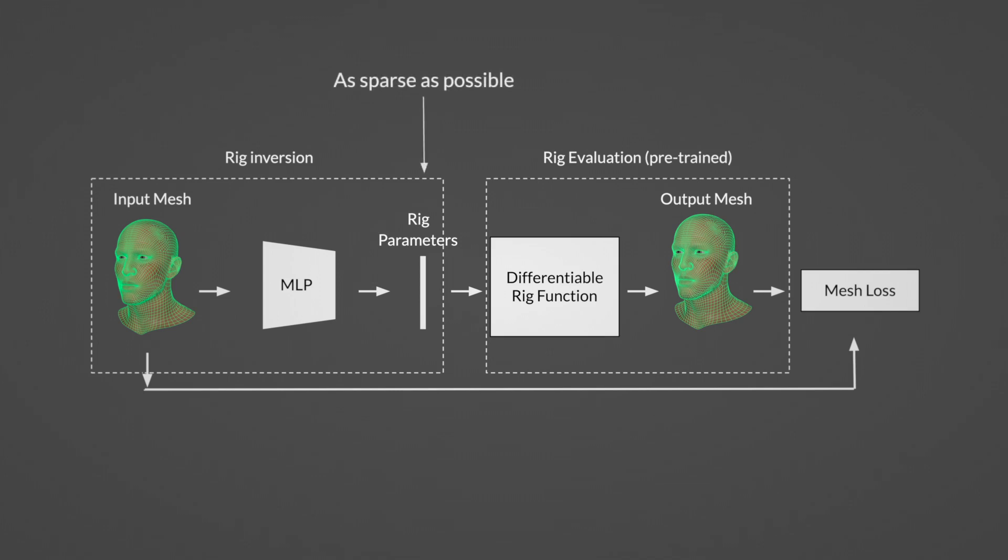It's a good idea to encourage sparsity in the rig parameters so that they are easier to tune by the animators. This can be done, for example, by using a lightly weighted L1 loss on the rig parameter output, in addition to the mesh loss.